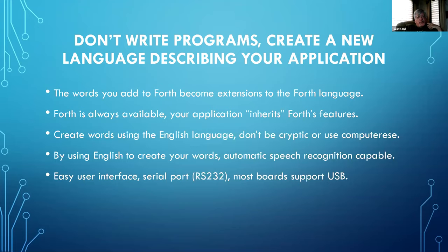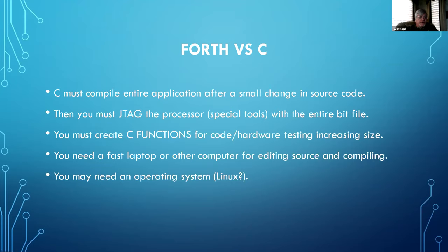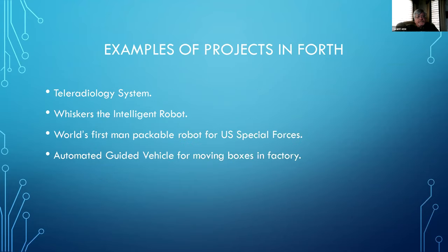By using English to create your words, automatic speech recognition becomes easy to interface. Forth versus C: C must compile the entire application after a small change in source code, then you must JTAG the processor with the entire bit file. You must create C functions for hardware testing, increasing your code size. You need a fast laptop for editing source and compiling — C compilers are doing a lot, so they need a powerful computer. You may also need an operating system like Linux or Windows.